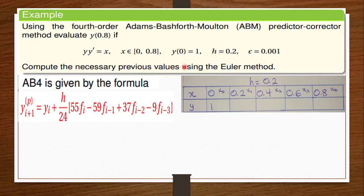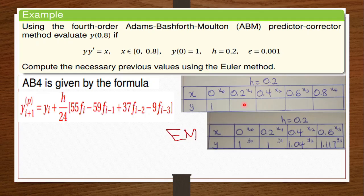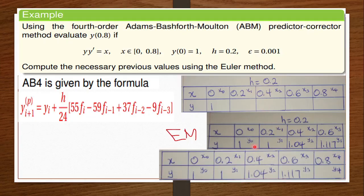We are supposed to compute the previous values using the Euler method. In our previous video we used Runge-Kutta to find the initial values; now we are using the Euler method. The values from the Euler method fill the initial portion of our table, and then Adams-Bashforth continues from there, picking those Euler values and inserting them into the Adams-Bashforth table.